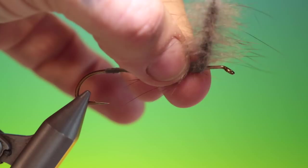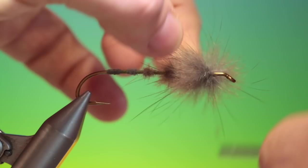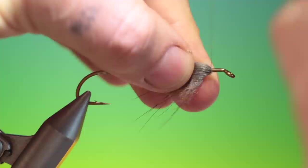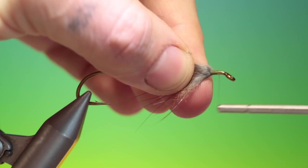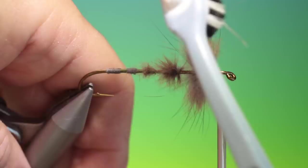And of course as a collar hackle for larger predator and saltwater patterns. So we fold that back again each turn just to get the hackle in place as you would a wet fly hackle and wind on the fur hackle. All right, get that out of the way.